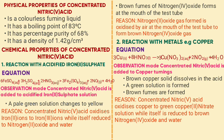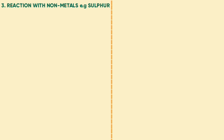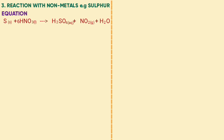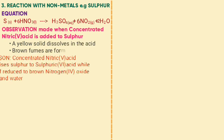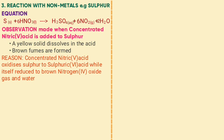The next chemical property is reaction with non-metals, for example sulfur. The equation is: S + 6HNO3 → H2SO4 + 6NO2 + 2H2O. Observations when concentrated nitric acid is added to sulfur: the yellow solid dissolves in the acid and brown fumes are formed. Concentrated nitric acid oxidizes sulfur to sulfuric acid while being reduced to brown nitrogen dioxide gas and water.